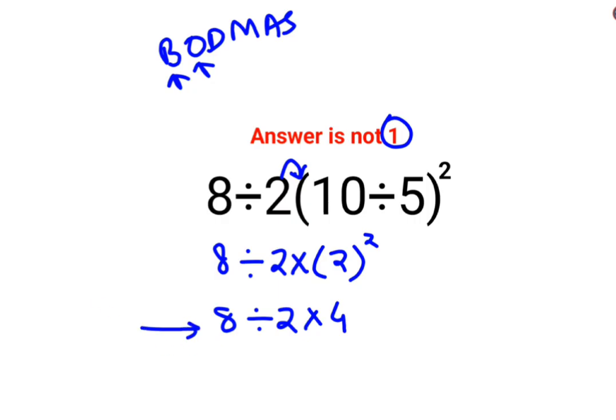Remember you need to go from left to right. Always remember, division and multiplication hold equal precedence. So you cannot give higher priority to division or to multiplication. So in this case, first we will do 8 divided by 2 which is 4 multiplied by 4. The answer for this question is supposed to be 16.